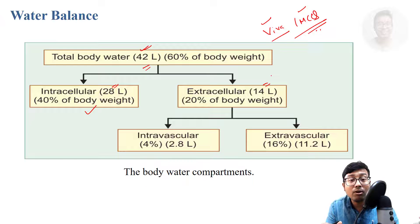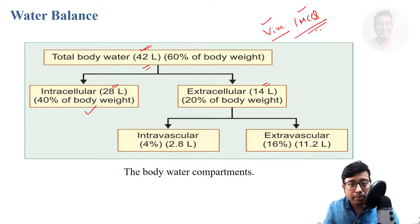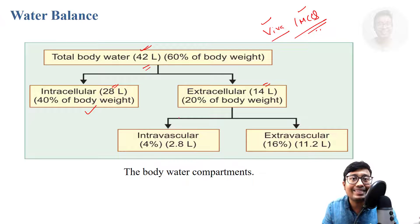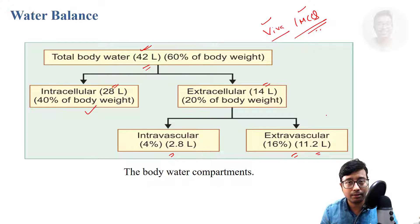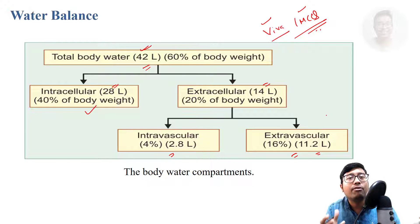Among the extracellular component, intravascular — that is inside the blood vessels, arteries, heart, the cardiovascular system — is only 4%, and majority is in the tissue fluid that is outside the blood vessel, the interstitial space, which is 16% or 11.2 litres. This amount can vary roughly from textbook to textbook, but is more or less the same.